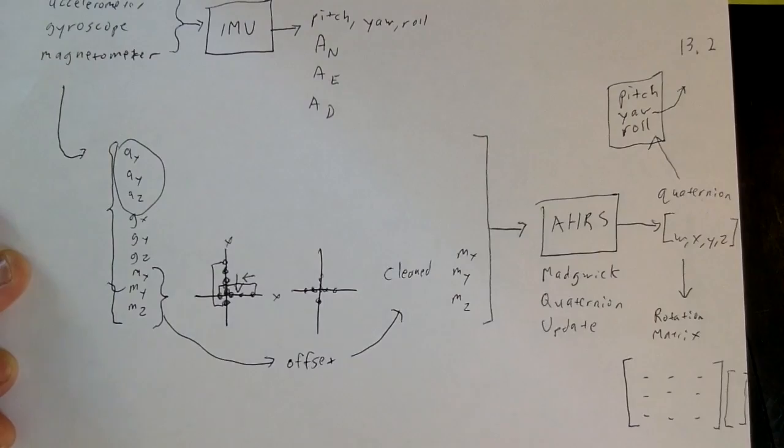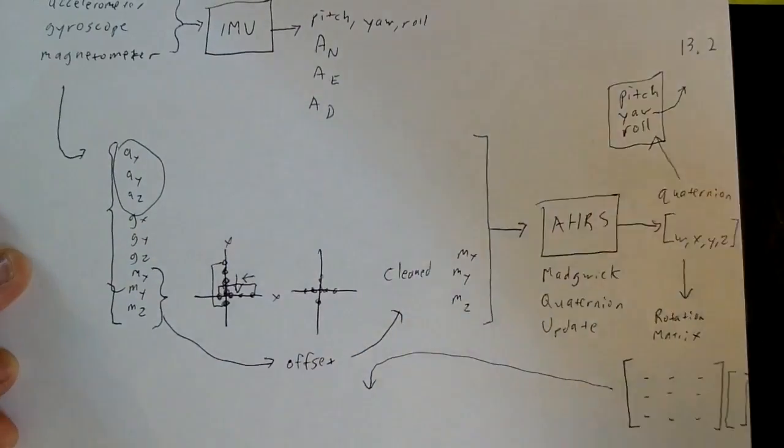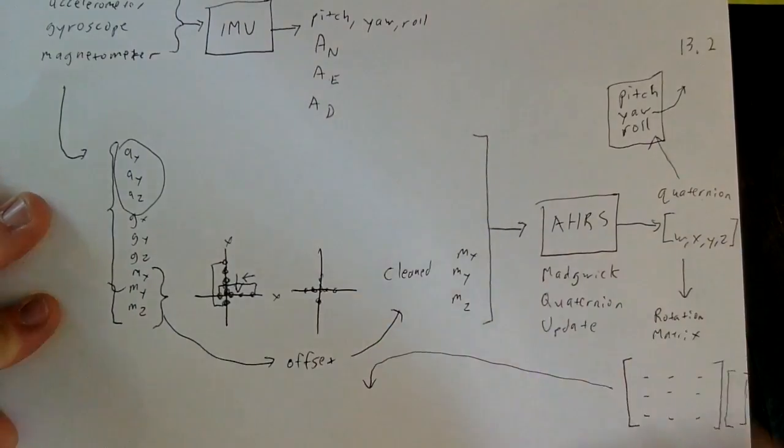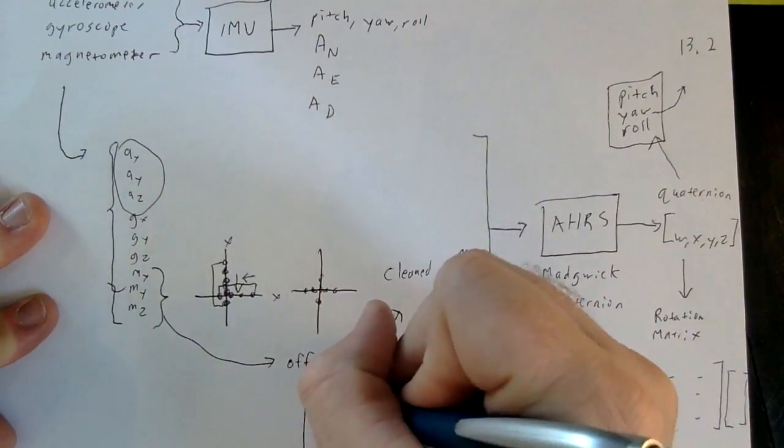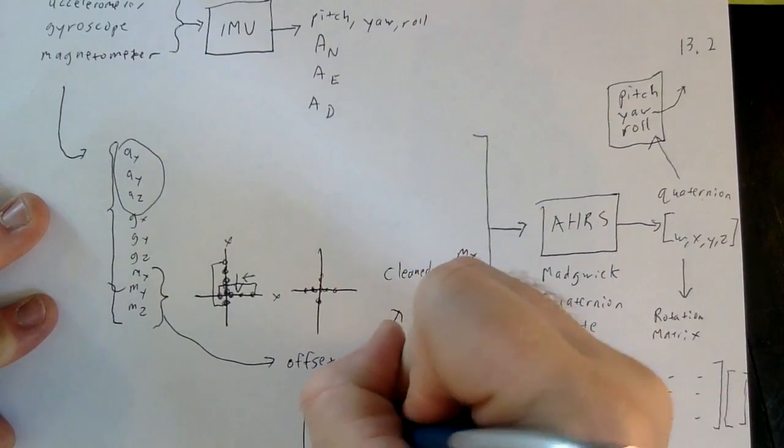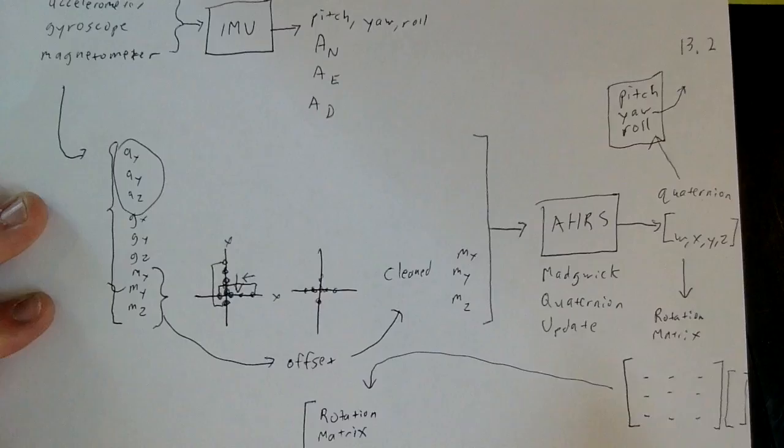So for example, it's important to understand that you can have a 3x3 matrix, and you can multiply that by a 3x1 vector. That is useful to know. So anyway, I'm going to move this over here. So we have our quaternion, we convert it into a rotation matrix.